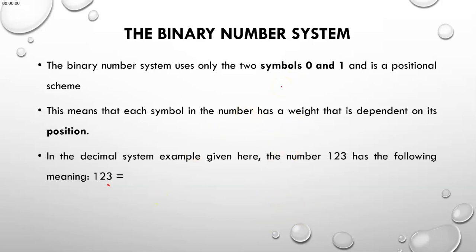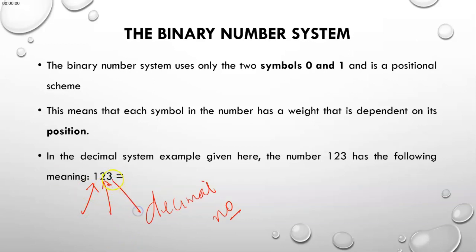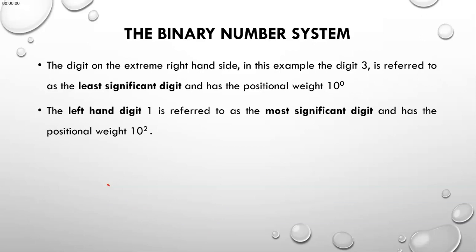123 is a decimal number where 1 is in the position of hundreds, 2 is in the position of tens, and 3 is in the position of ones. We were able to show that the value of this number in decimal format is represented by the addition of the hundreds, tens, and ones.